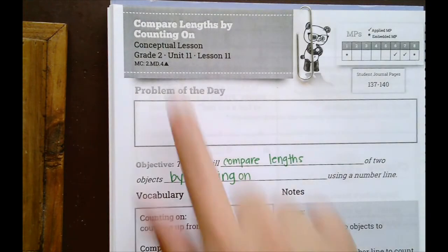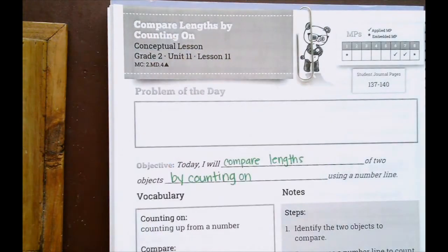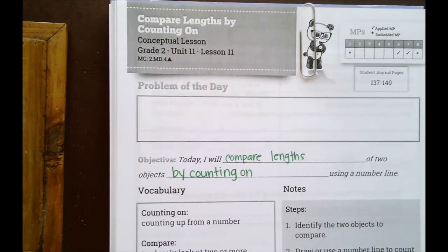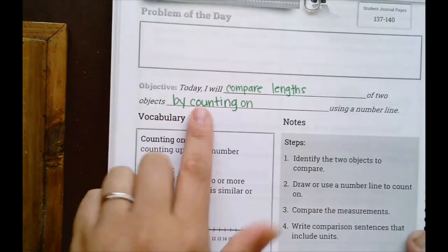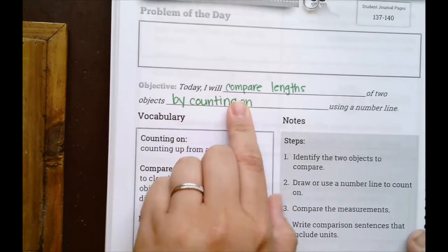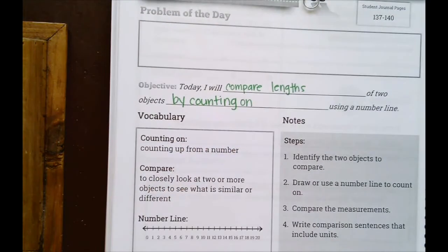So we'll be working on comparing lengths by counting on. Let's start with the objective. Our objective is: today I will compare lengths of two objects by counting on using a number line.